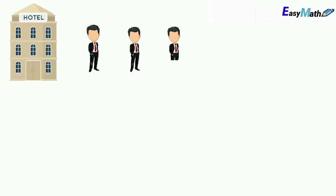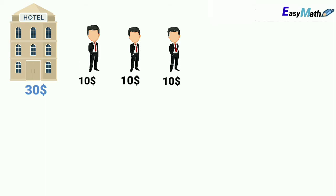Asalaamu alaikum friends, here we have another trick question which I thought was a lot of fun. It involves three friends staying in a hotel and the cost of the hotel is $30 per night. So if you divide this evenly, each of the friends need to pay $10 per night to stay in the hotel.